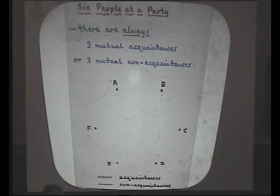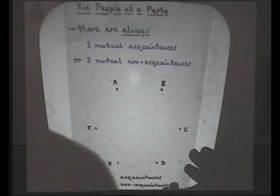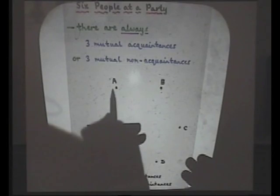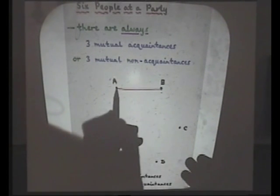So there must be at least three of one color. If there are only two red ones and two green ones, then you haven't got enough. So there must be at least three of one color. And we can assume it's red. The argument is just the same if it's green. So at least, say, three red lines coming out of here.